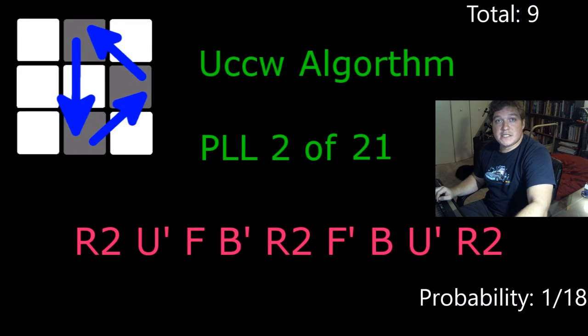Same story for the UCCW algorithm brings our total up to nine. There's four ways for this to occur. Probability one in 18.